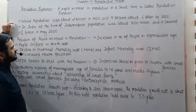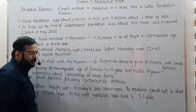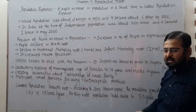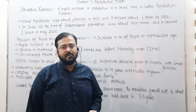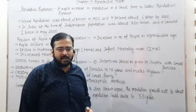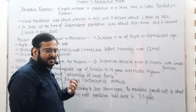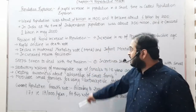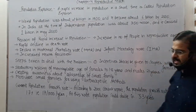The world population was about 2 billion in 1900 and it became 6 billion in 2000. So in 1900 the total human population on Earth was about 200 crores, which became 600 crores in 2000 — just after 100 years. This is a very rapid increase in population.